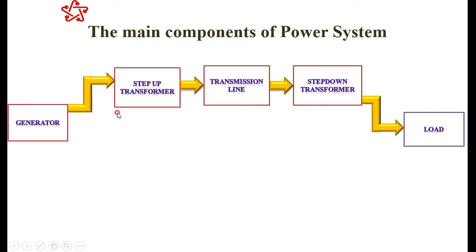We transmit the voltage to the consumer load end at high voltage for economic purposes. Some high voltage levels for transmission lines are 115 kV, 130 kV, and 230 kV. With development in power systems, extra high voltage transmission is available at 345 kV, 500 kV, and even 765 kV, reaching up to 1000 kV and 1500 kV with ultra-high voltage transmission.